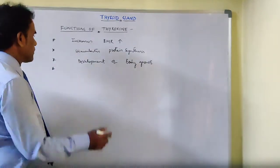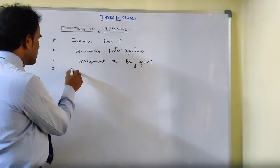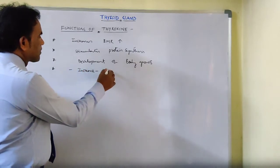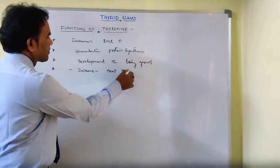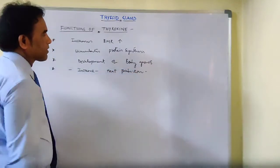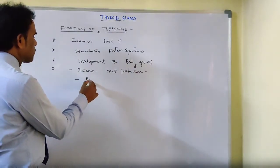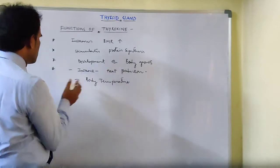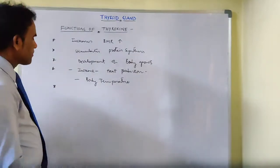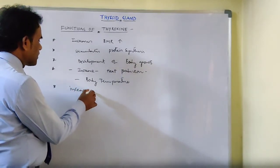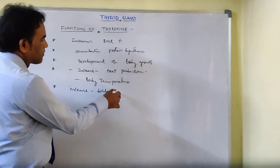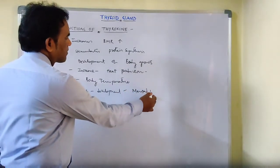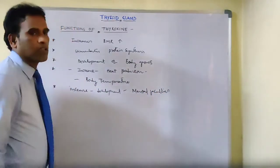Thyroxine also increases heat production, and therefore it maintains and regulates body temperature. It also helps in the development of mental faculties.